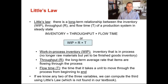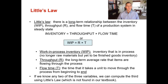In this short video, we're going to talk about Little's Law. Little's Law is a simple formula that explains the relationship among flow time, throughput, and work in process. In chapter 16 on Lean, we've been talking a lot about improving throughput, and Little's Law is a measure of what that throughput is.